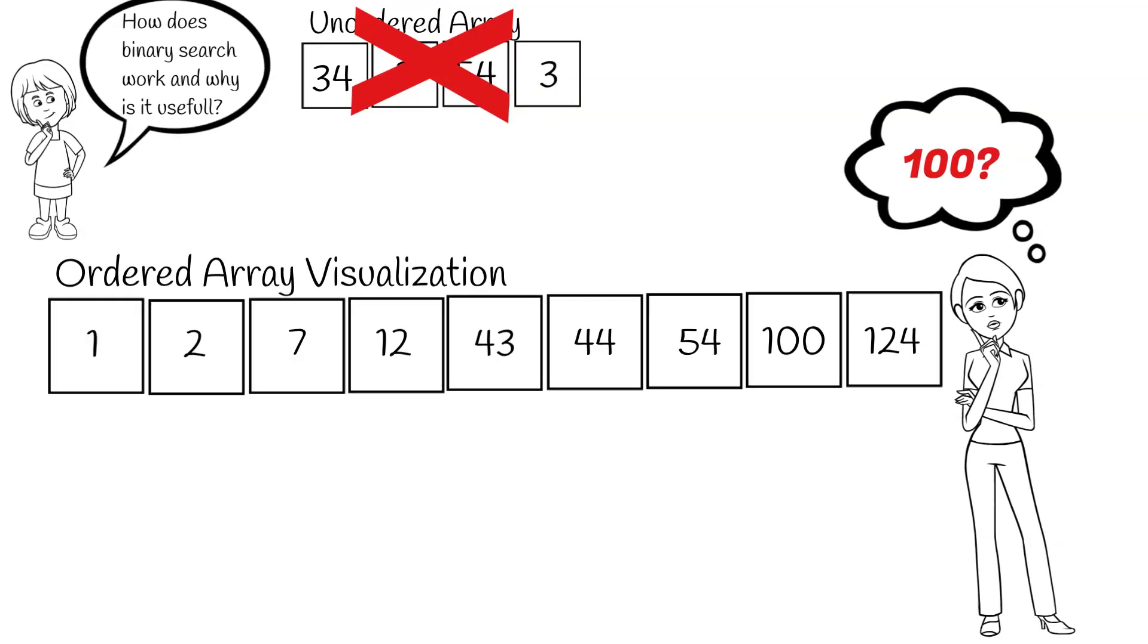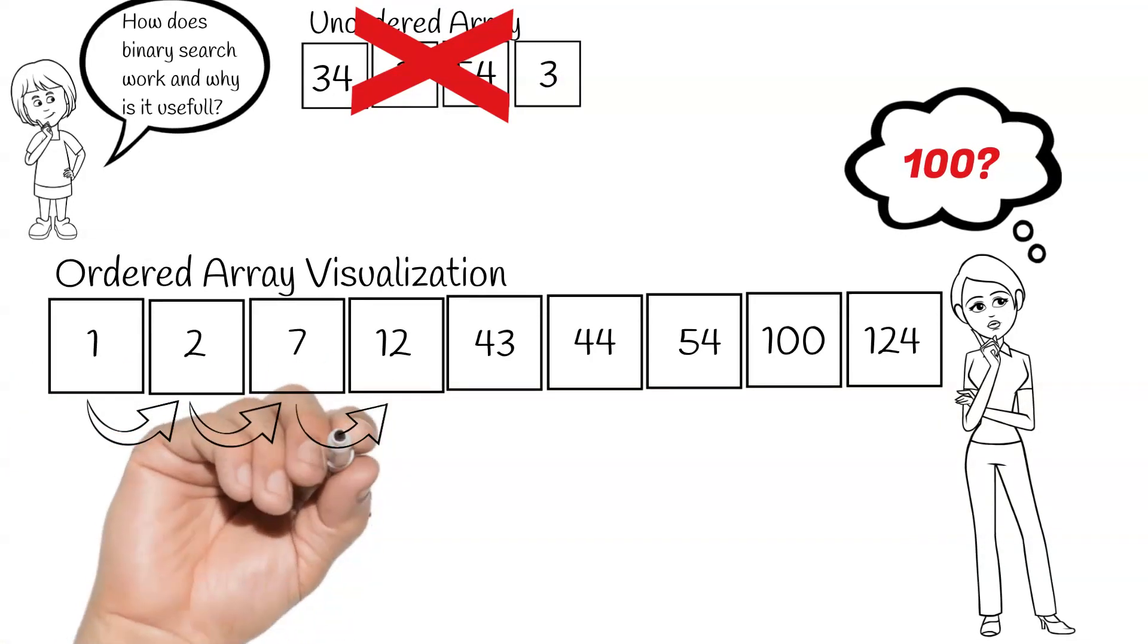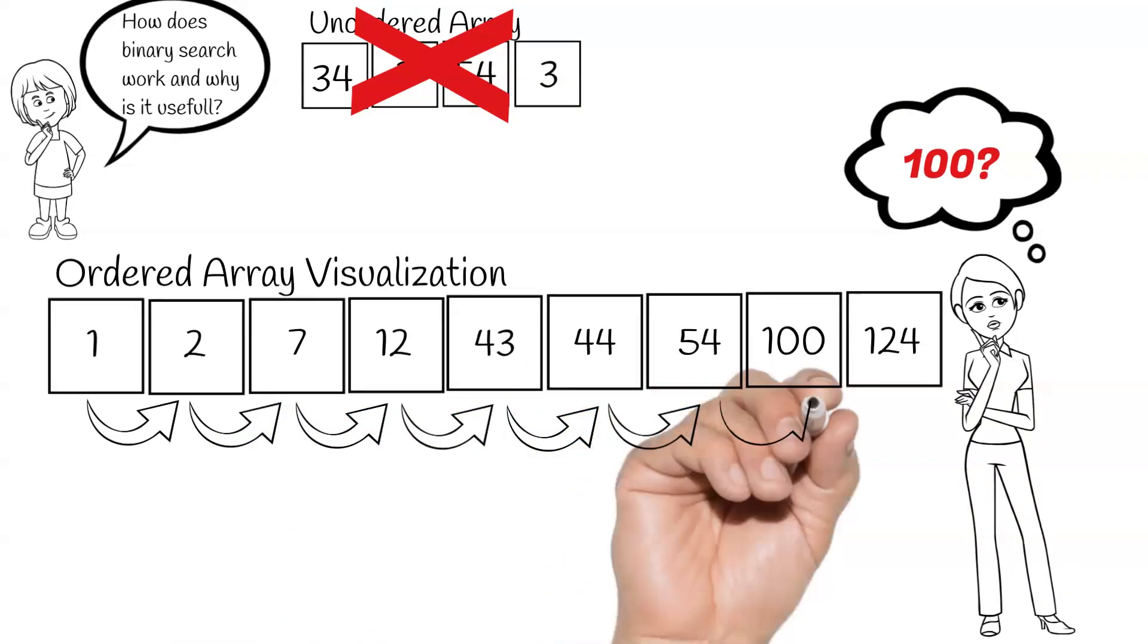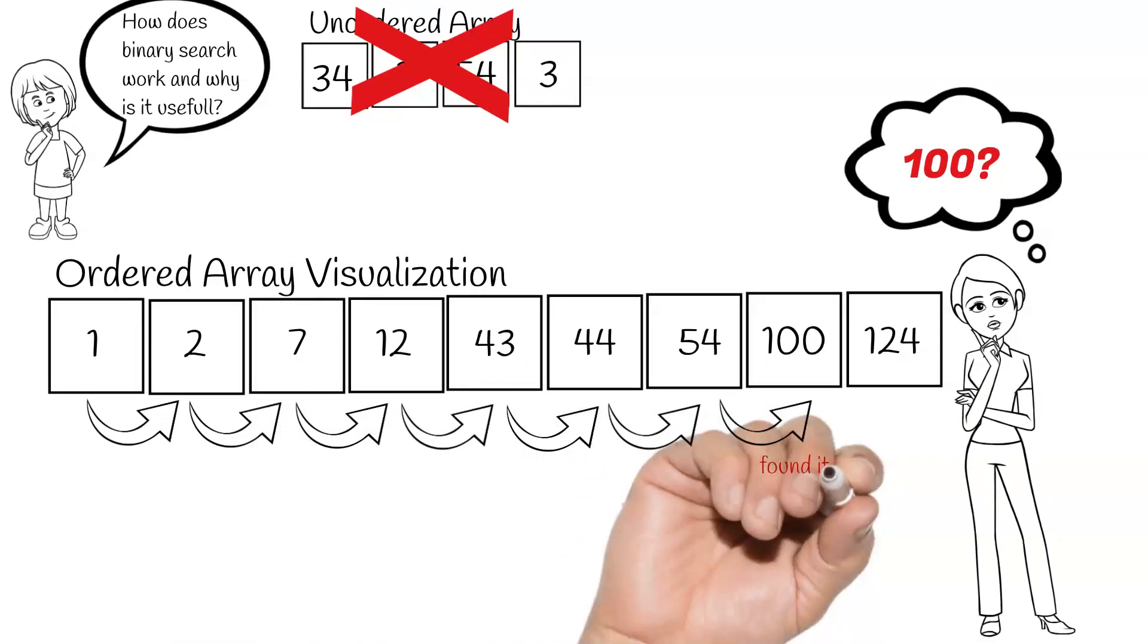The naive solution would be to iterate through each element of the array checking to see if the value is equal to 100 like so. But for this method, we have to iterate through every element in the array up until the value that we are looking for.